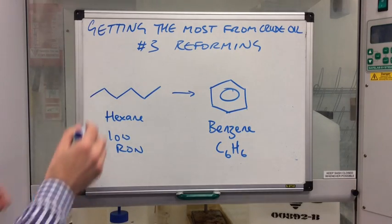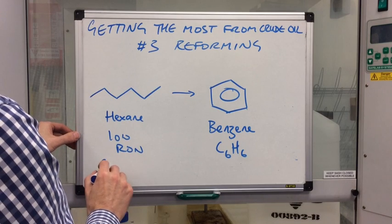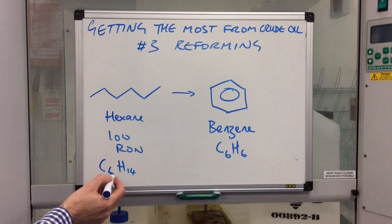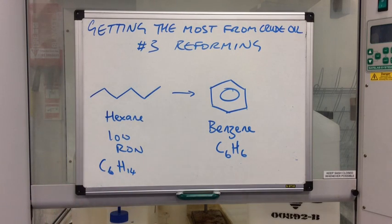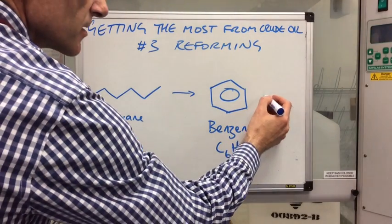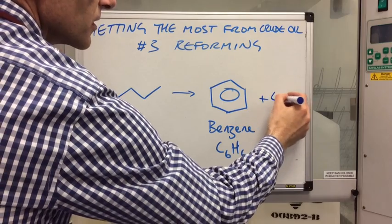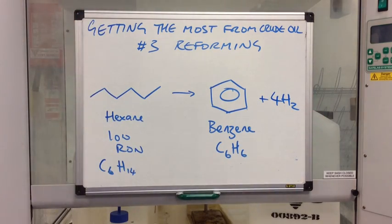So if we start, if we remember we started out with C6H14. Effectively, there are eight hydrogens that we need to account for. So to balance this reforming equation, we would get four moles of H2. So reforming produces cyclic hydrocarbons, aromatic hydrocarbons and also hydrogen.